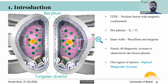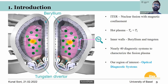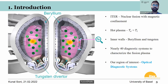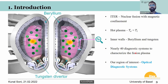So this is the ITER reactor — most of you are aware of this. What is particularly important for our work is the fact that the inner walls are made of beryllium and tungsten, and that our work goes away from the fusion reactor itself and towards the diagnostic systems of this reactor, particularly the optical diagnostic systems that you see at the walls of the reactor, which will comprise several of the diagnostic systems in ITER itself.